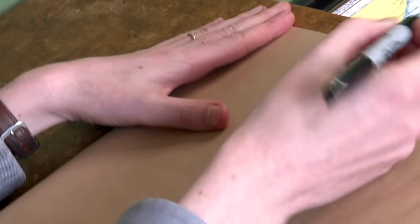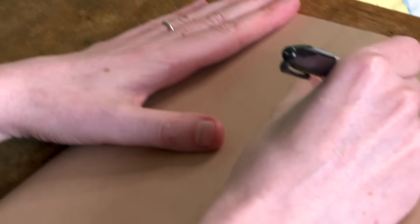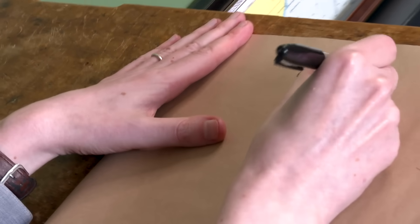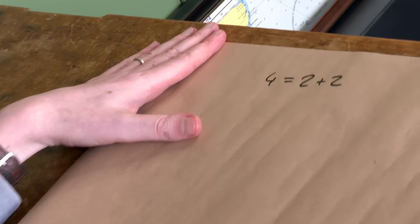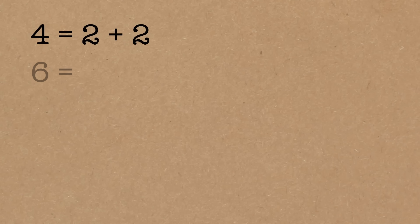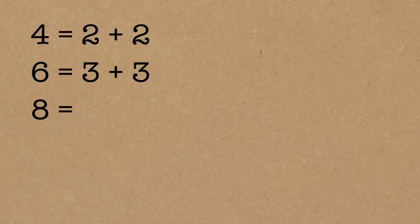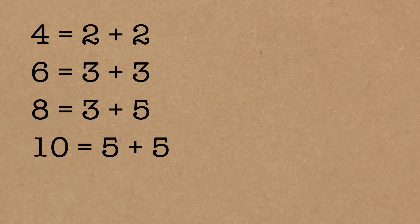So we can do a quick example of what that means. We'll start with 4, and I can write it as a sum of 2 primes — 2 and 2 would work. Let's take the next even number, 6. That's 3 and 3. And then 8 — that's a bit more interesting because it's 3 and 5. And then 10 — it could be 5 and 5.